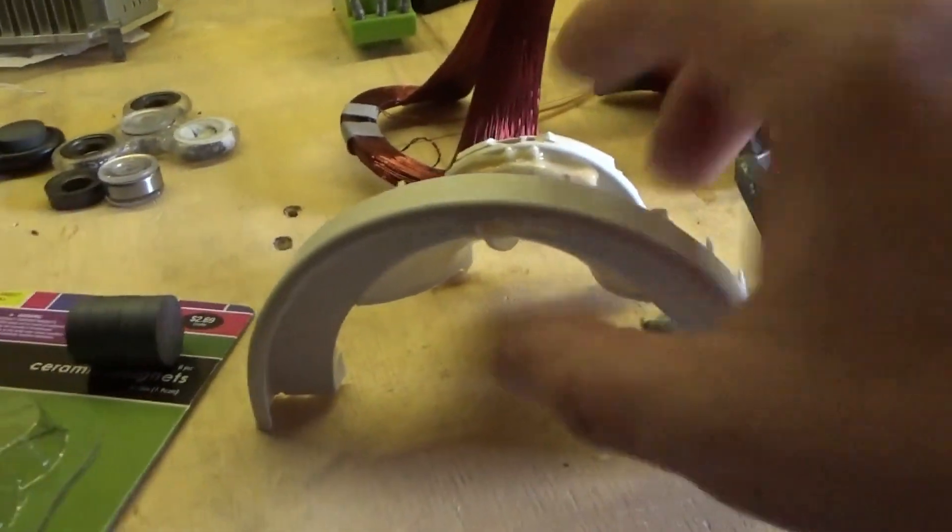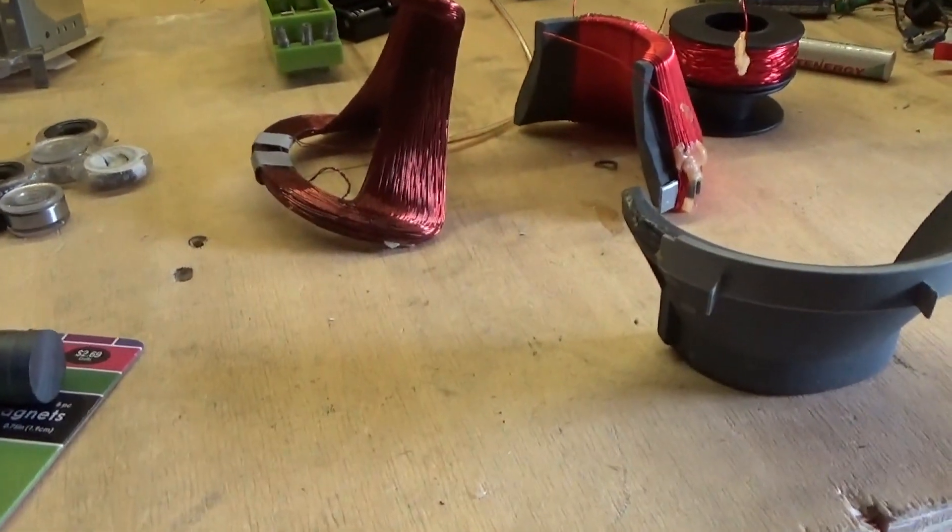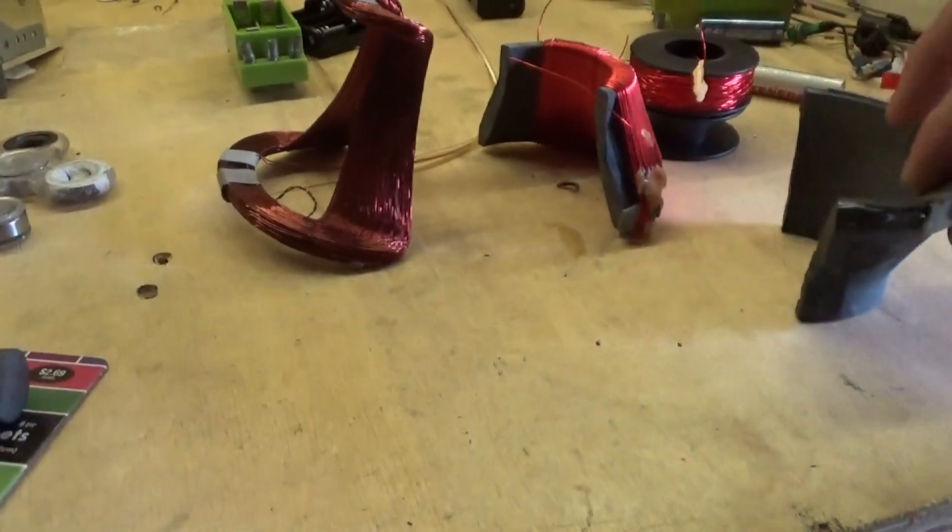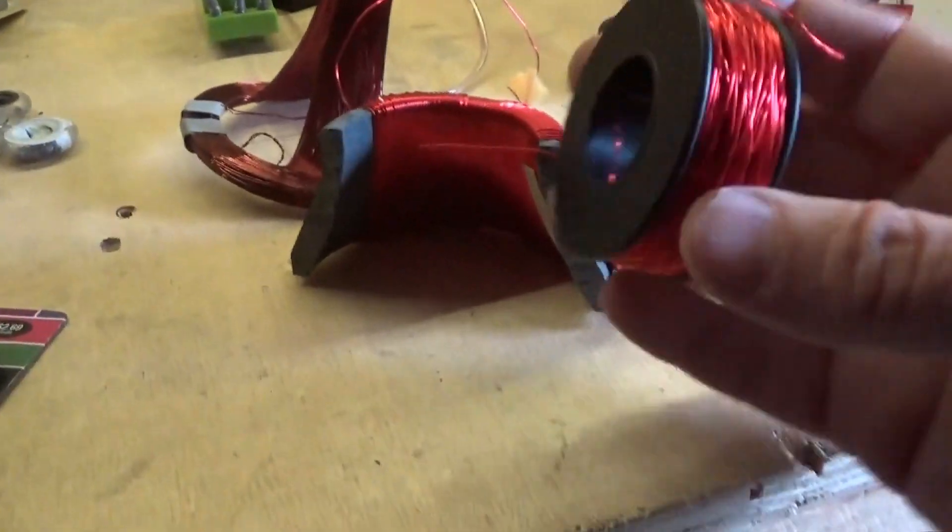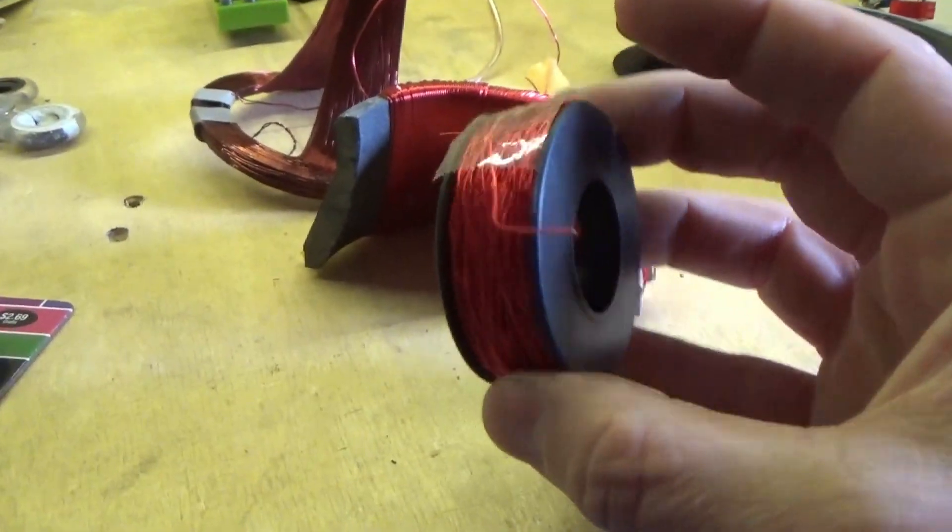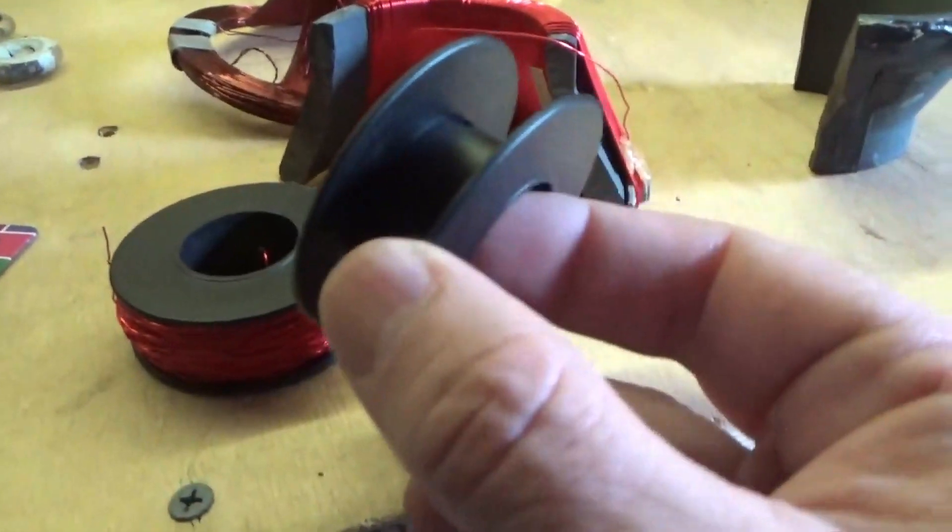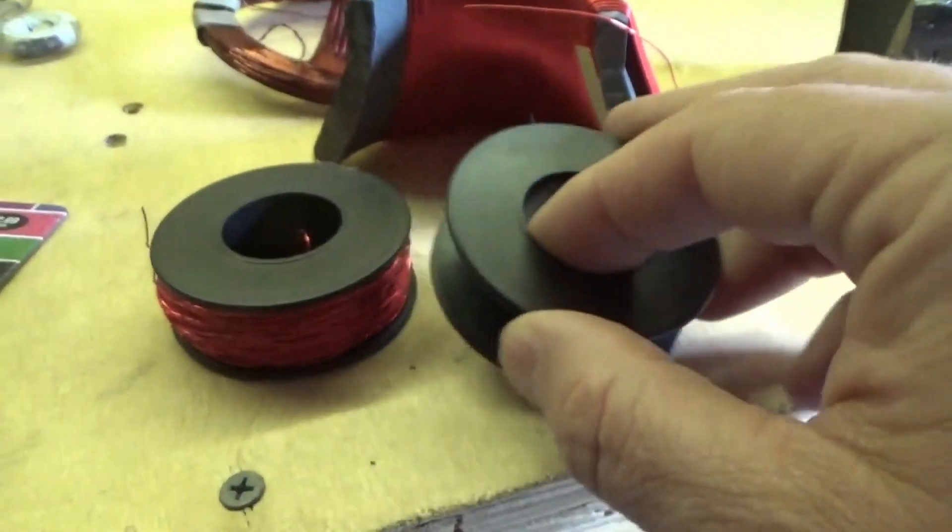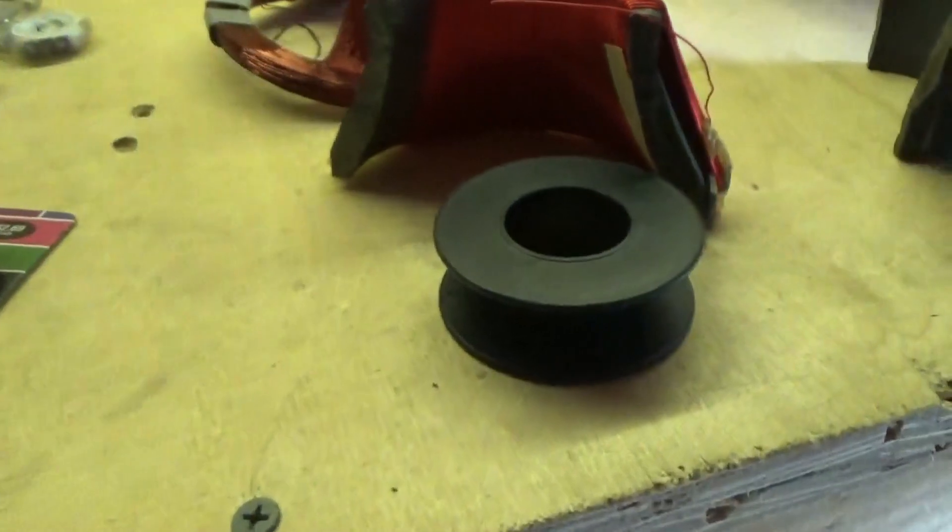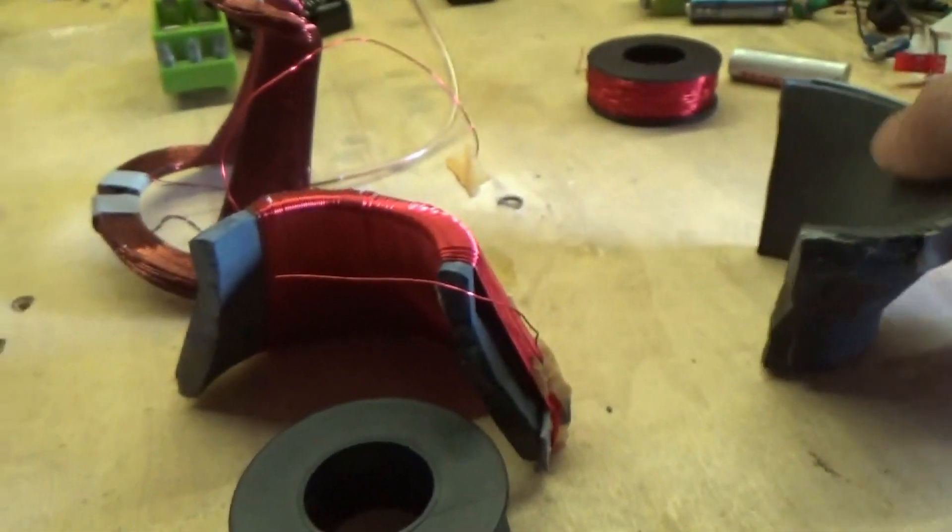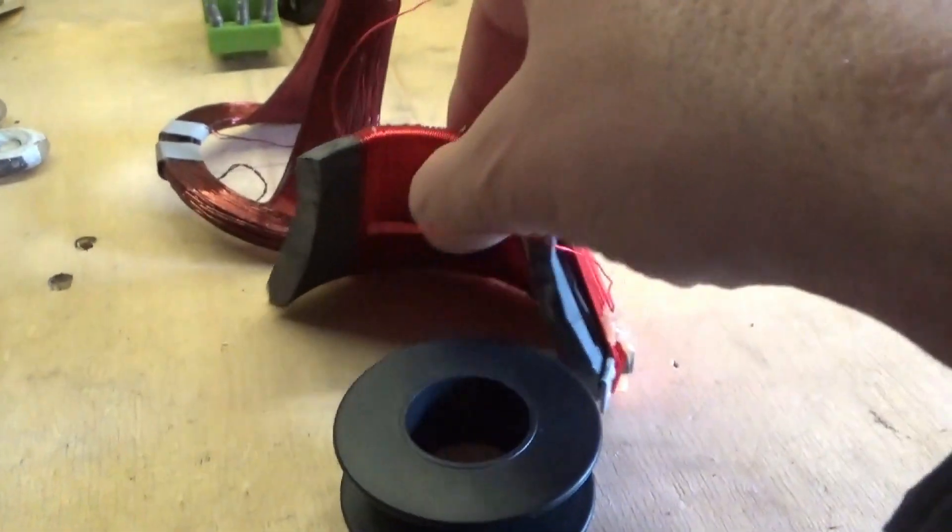I unwound one of the halves here onto a spool, an empty wire spool, so I got a fair amount of wire. See, there's the empty spool, same size. So I got a fair amount of wire from one half of this television coil. So that goes in the garbage. I still have to unwind the other half.